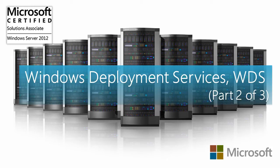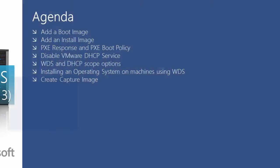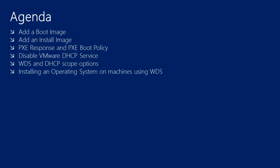Windows Deployment Services, WDS, Part 2 of 3. In this video, we'll see how we can add a boot image, which is required to boot a PXE client. We'll also see how we can add an install image, which contains all the files required to install a Windows operating system on a PXE client. We'll also look at the PXE response and PXE boot policy, which defines how your WDS server is going to respond to your PXE clients. We'll also look at disabling the VMware DHCP service if you are running your WDS setup on a VMware virtual environment, and DHCP scope options. Finally, we'll install an operating system on a PXE client using WDS.